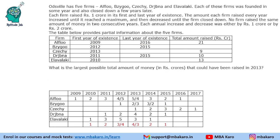What is the largest possible total amount of money raised in 2013? We give firm A its maximum possible in 2013, which is 5 crores. Firm B in 2013 is 3 crores. For firm E, the maximum possible in 2013 is 4 crores. So the largest total is 5 plus 3 plus 5 (from C and D) plus 4 equals 17 crores.